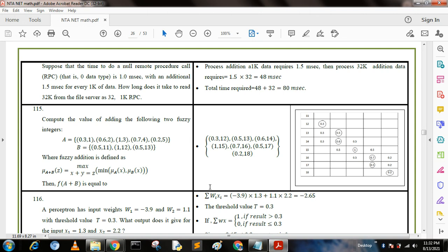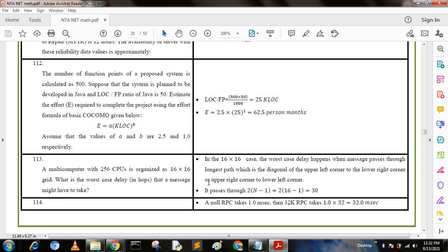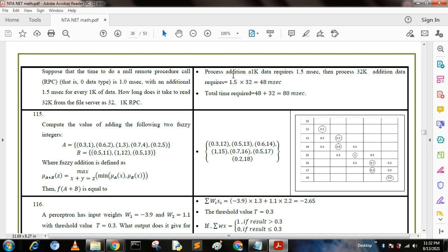Next question: Suppose that the time to do a null remote procedure call (RPC), that is zero data type, is 1.0 microseconds, with an additional 1.5 microseconds for every 1 kilobyte of data. How long does it take to read 32K from the file server as 32 1K RPCs? A null RPC takes 1.0 milliseconds, then 32K RPC takes 1.0 times 32 equals 32.0 milliseconds. Processing an additional 1K data requires 1.5 milliseconds, then processing 32K additional data requires 1.5 times 32 equals 48 milliseconds. So total time required equals 48 plus 32 equals 80 milliseconds.